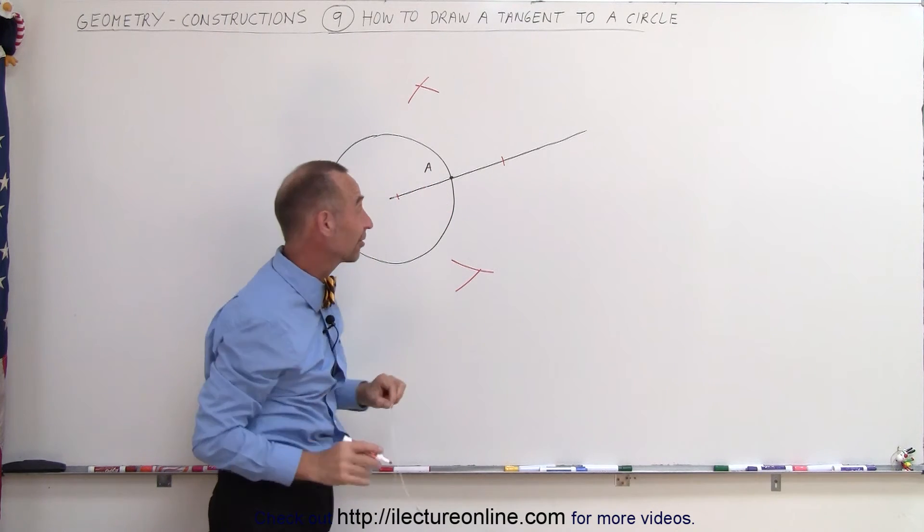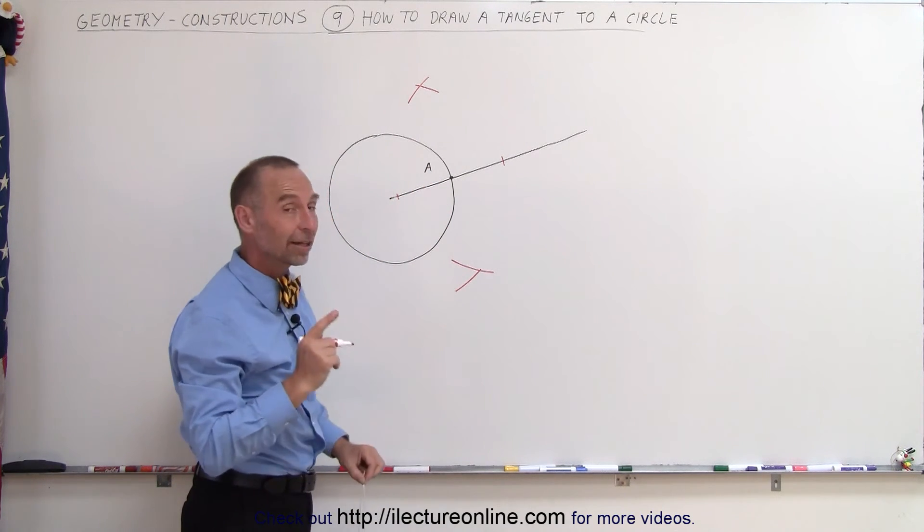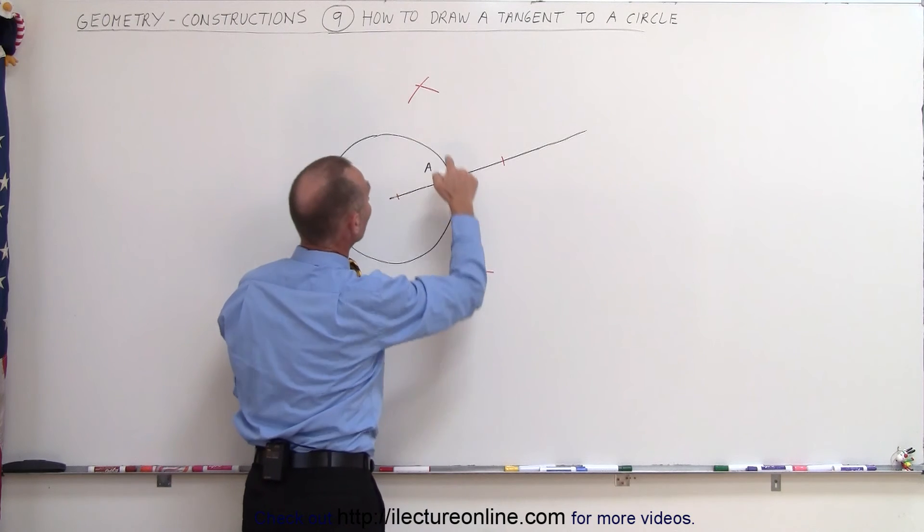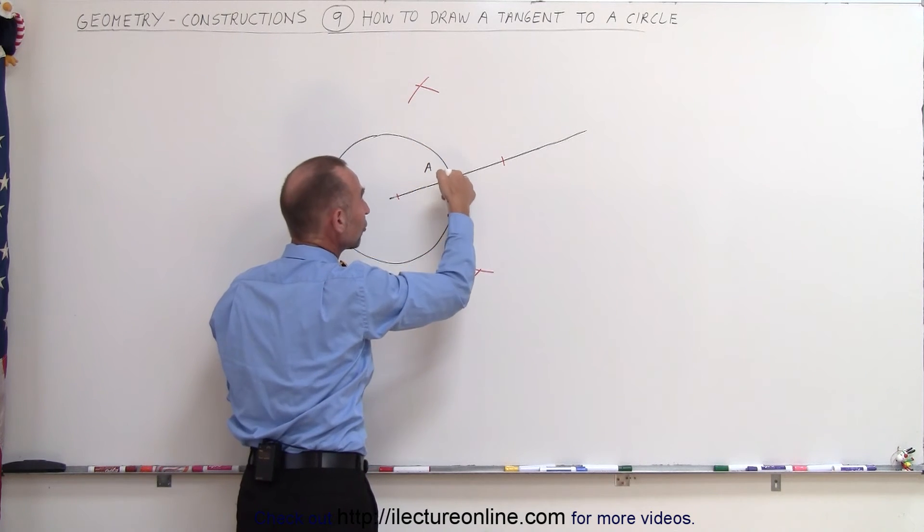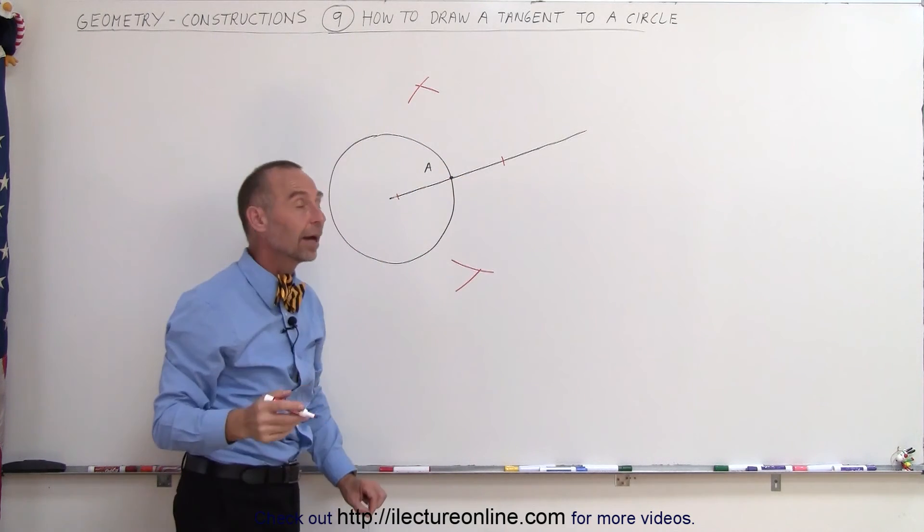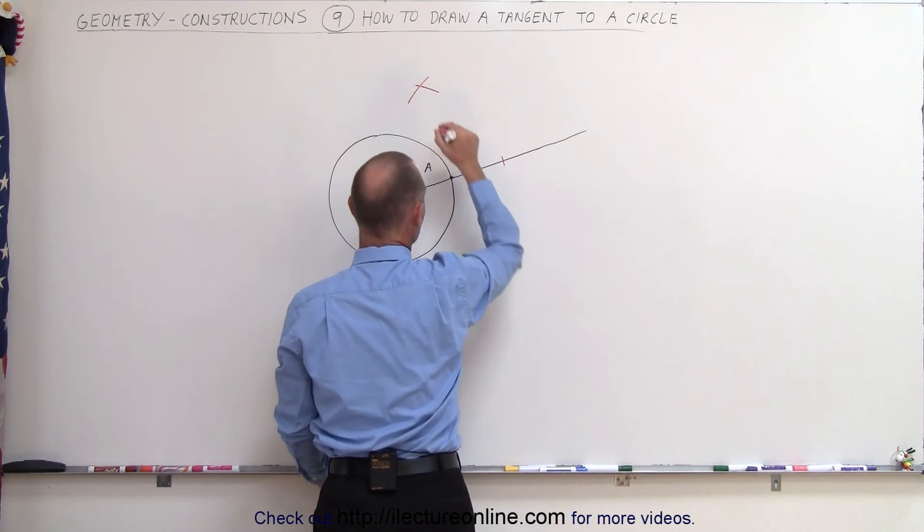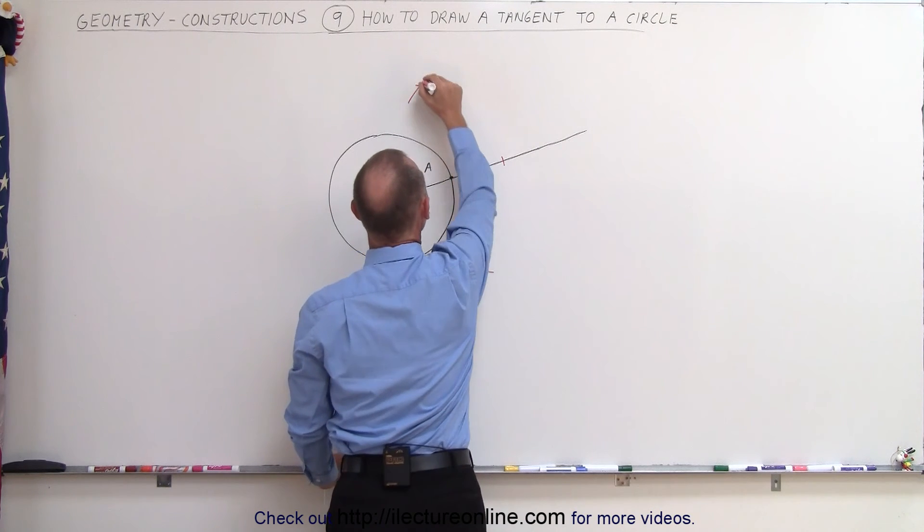They barely crossed but just good enough. Now if I connect this point to this point, it will be tangent to the circle right at point A. So now I can go ahead and draw the tangent line. A line from there to there and it will come right through point A.